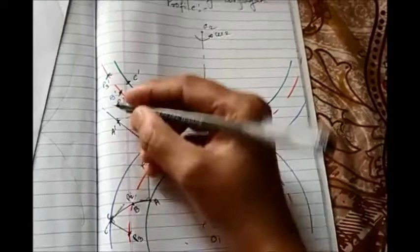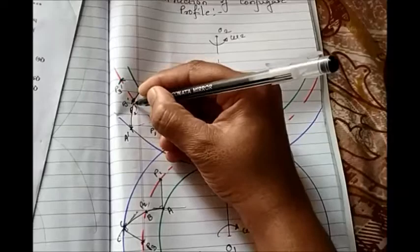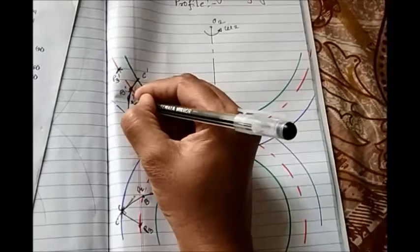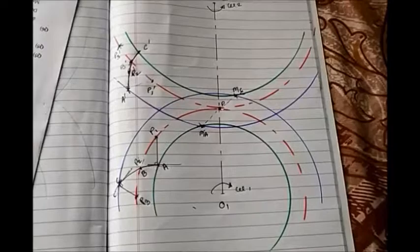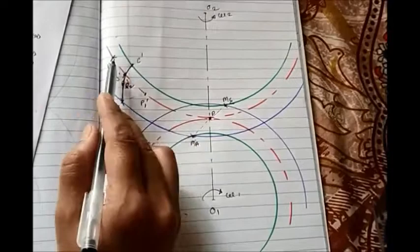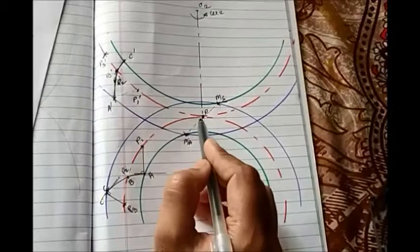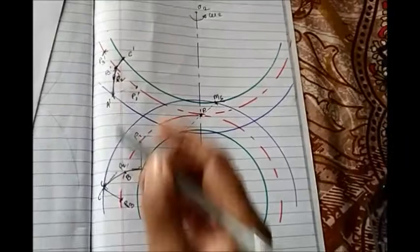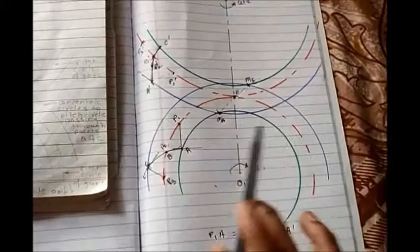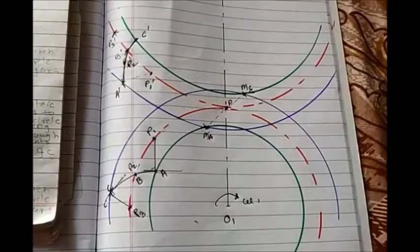Now just join these three points A', B', C' with a smooth arc and you will get the conjugate tooth profile corresponding to the original profile ABC on gear 1. Note that C' is marked on this side because when gear 2 rotates in its direction, when P3' reaches point P, C' is positioned there. Joining these points with a smooth arc gives us the complete conjugate tooth profile. I hope you are clear with the idea of how to construct the conjugate tooth profile for gears. Thank you.